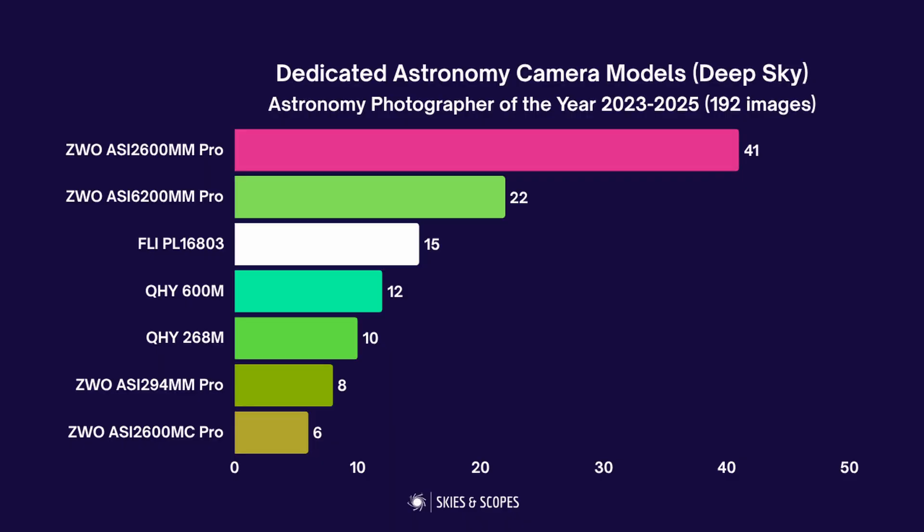Since half of that list of models isn't currently available, I've pulled out the most used cameras from just the last three years to get a more recent picture of what's being used. You can see the same two ZWO models come up top: the 2600MM Pro and the 6200MM Pro, plus the 294MM Pro and the color version of the 2600 at the bottom. So three models are really coming up top: the 2600, the 6200, and the 294.